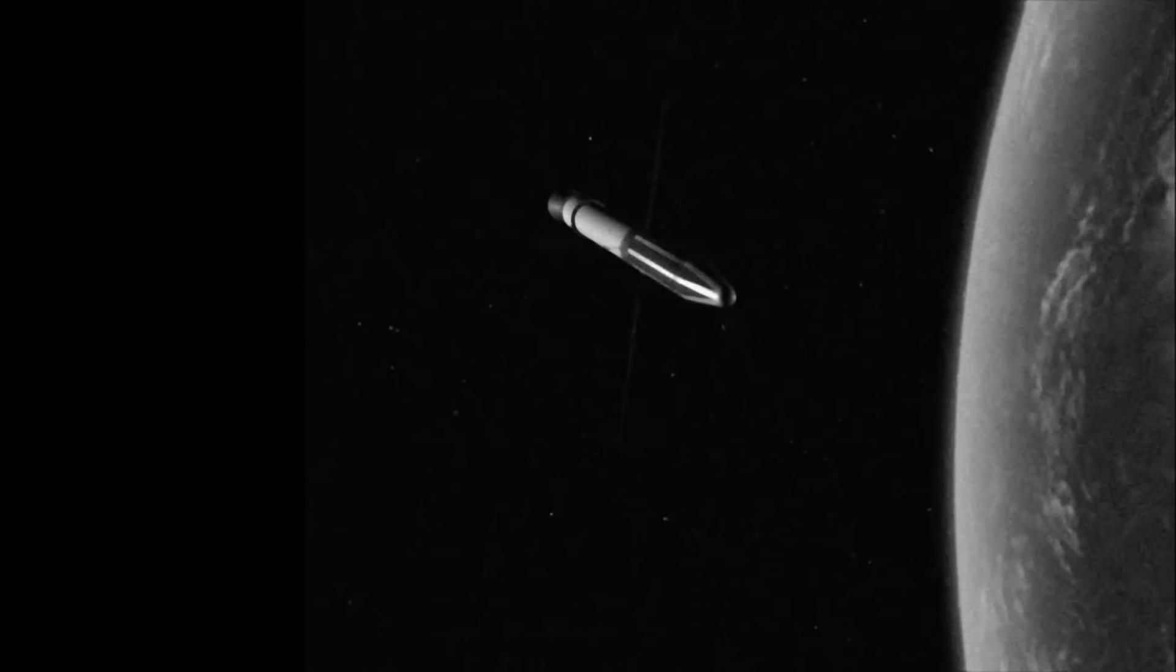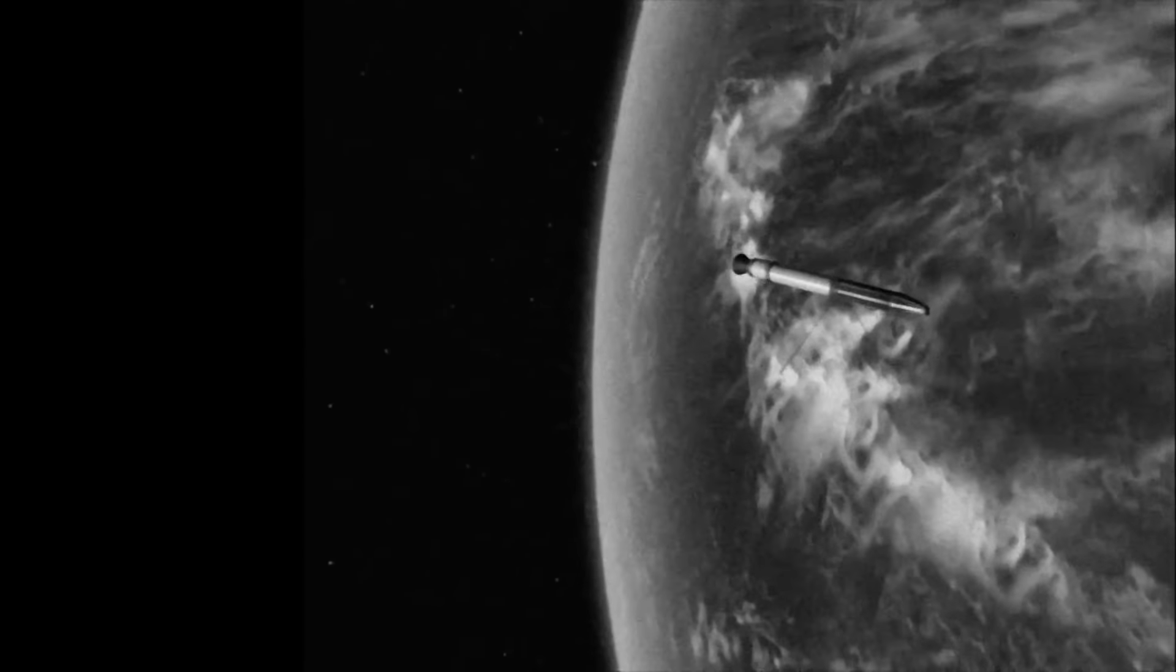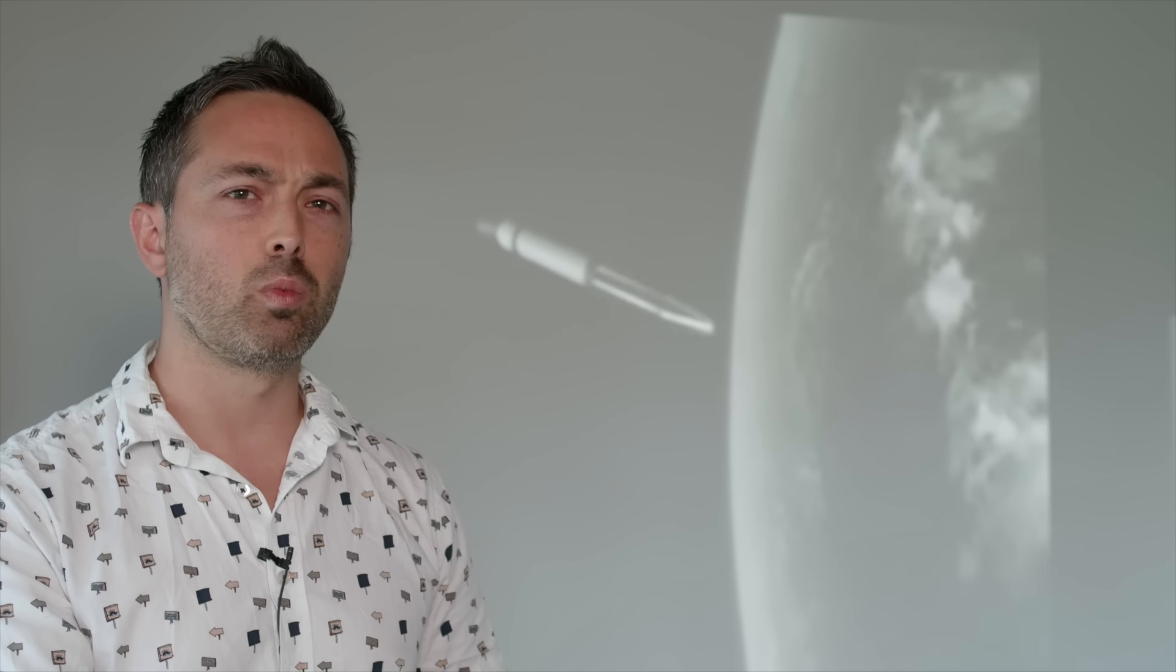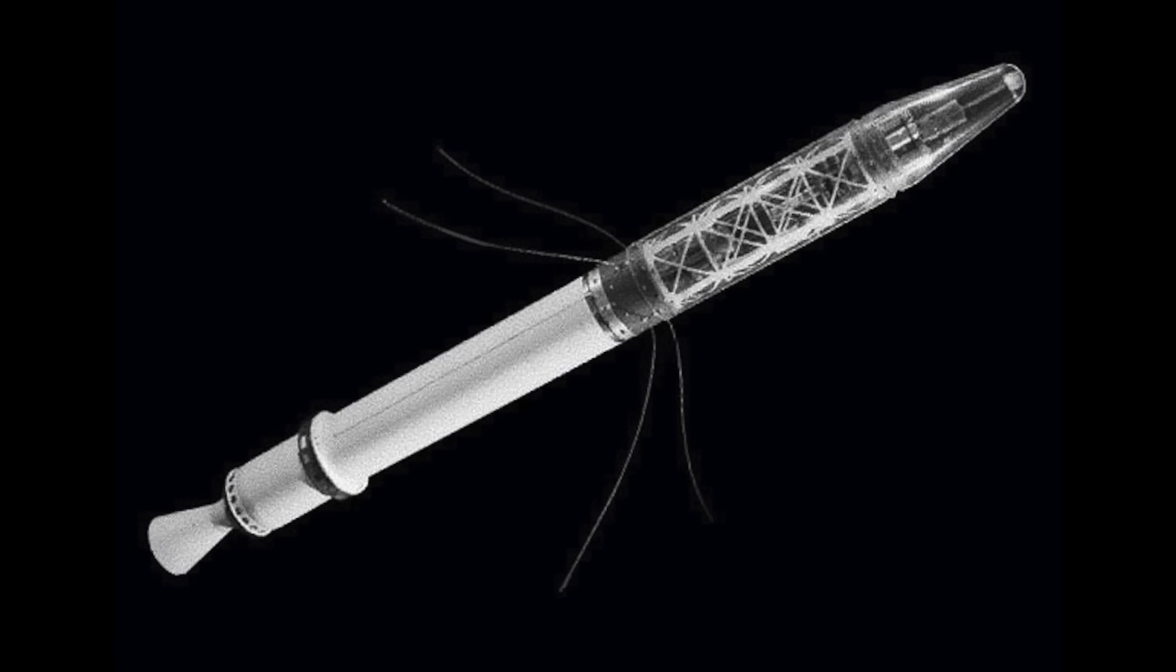The US learned this the hard way with their first satellite, the Explorer 1. It was designed to spin about its long axis and be spin-stabilized, but within hours of achieving orbit, it was rotating end over end. But what happened? I mean, it seems like a rigid cylinder. Well, the problem was these flexible antennas. They allowed the satellite to dissipate energy as they swung back and forth, gradually reducing the kinetic energy of the satellite until it had to rotate about the axis that maximized its moment of inertia.